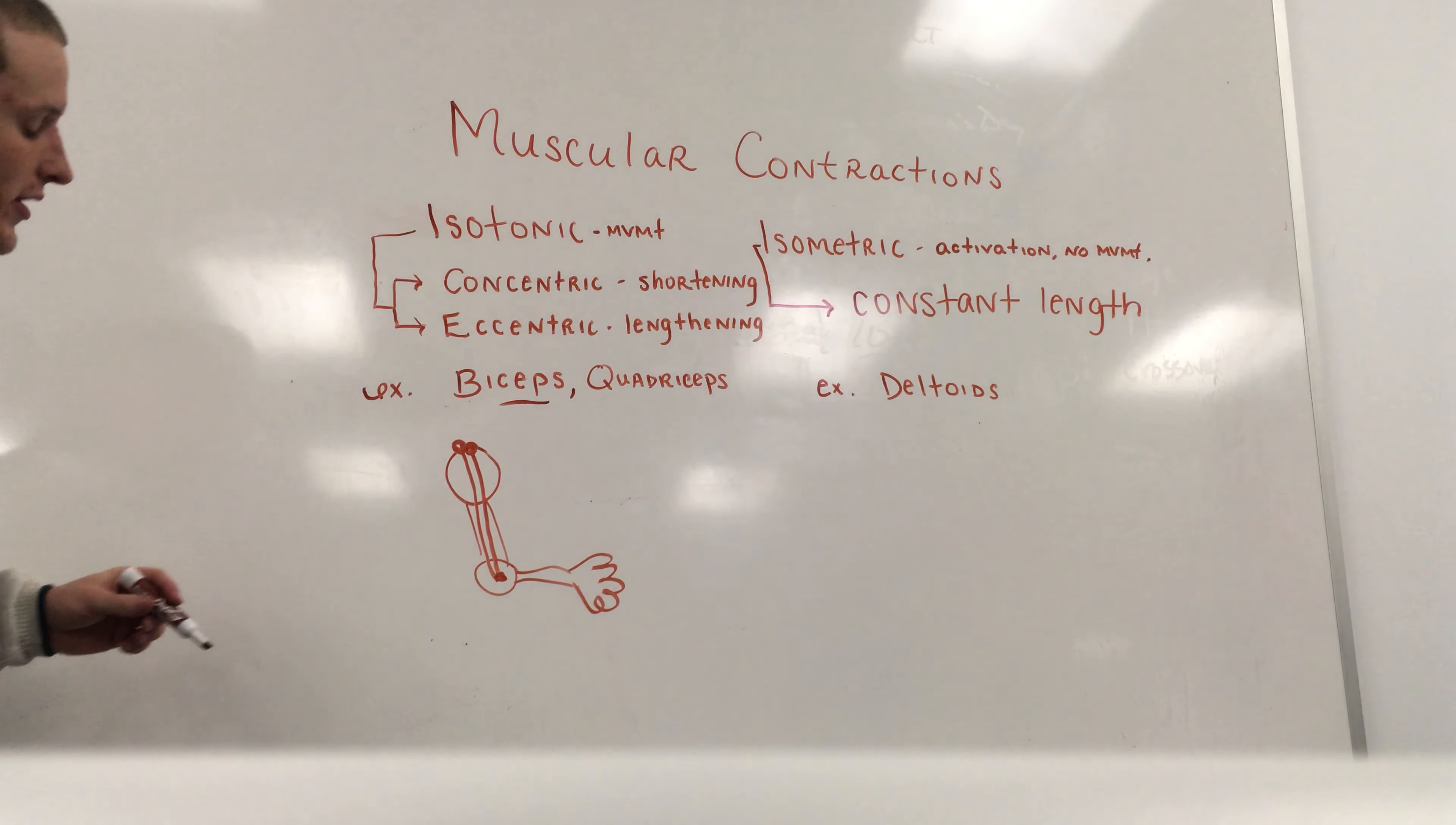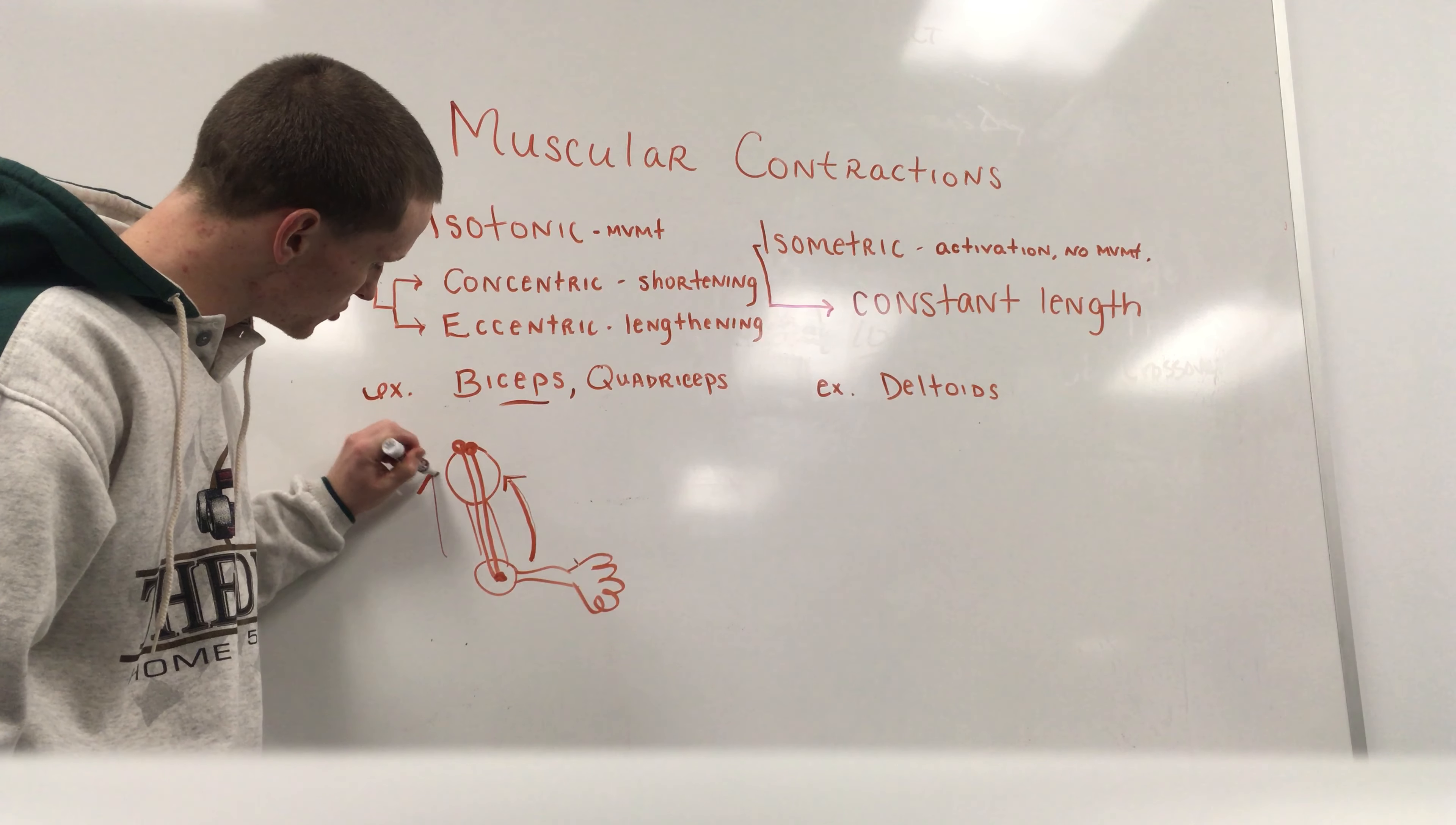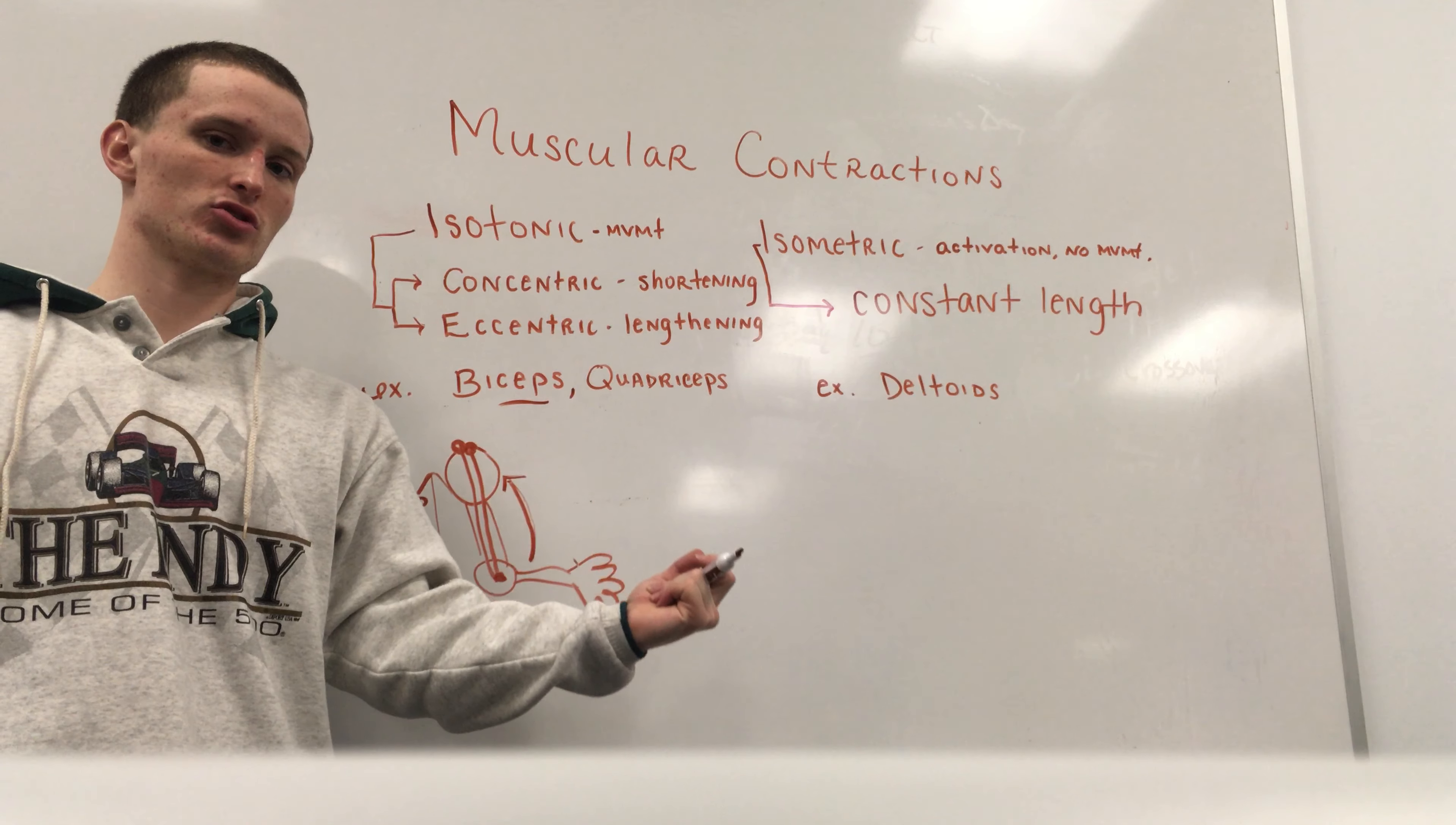And what we got going on here, if we bring this hand, this radius, up towards that humerus, the head of the humerus, we are shortening those muscle fibers. We are achieving a concentric contraction.